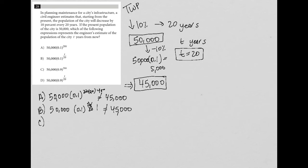For choice C, we plug it in as well, 50,000 times 0.9, 20 times 20, also does not equal 45,000. It's a number much larger than that.